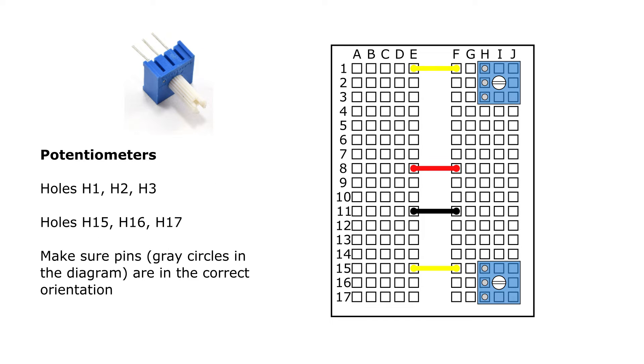Next, you're going to connect the two potentiometers. So these are the blue rectangular pieces with a little white knob. You're going to orient them so the gray pins are to your left, and plug the first one into holes H1, H2, and H3, and then the second one into holes H15, H16, and H17.